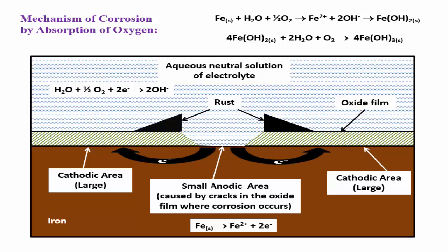Here, corrosion occurs by the absorption of oxygen. The most important point is the cathode area is large, so the consumption of electrons is high and the rate of corrosion is high.